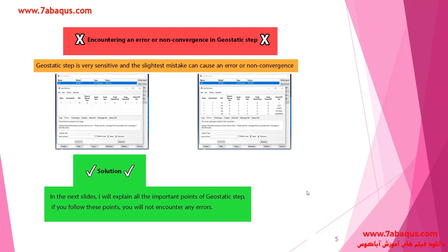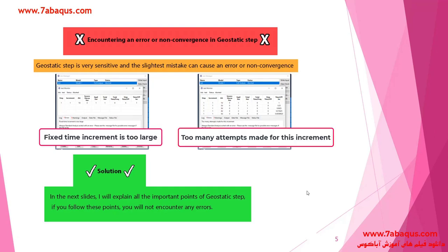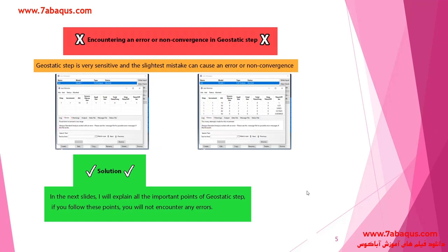Here I would like to explain about errors which may occur occasionally in the geostatic step. As you can observe in these two pictures, this error is distinguished by the terms 'fixed time increment is too large' or 'too many attempts made for this increment.' Since geostatic is a very sensitive step, the slightest inaccuracy may lead to error or non-convergence.